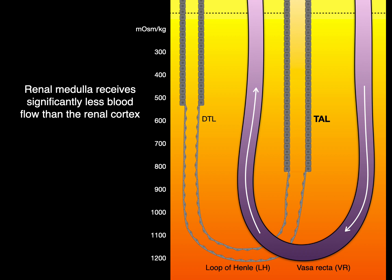The renal medulla receives significantly less blood flow than the renal cortex. Therefore, the medulla is sensitive to hypoxia and it's more vulnerable to ischemic damage.